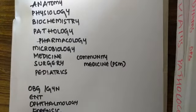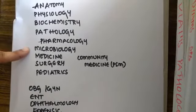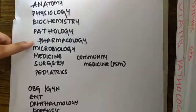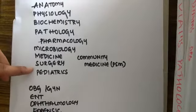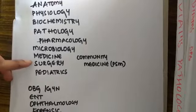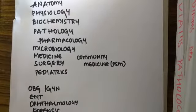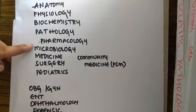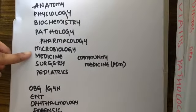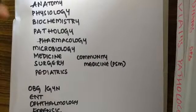Among all these subjects, everything gets repeated. What we learn in anatomy, physiology, biochemistry applies to pathology, pharmacology, and microbiology. Pathology, pharmacology, and microbiology are again repeated in medicine and surgery. The only difference in medicine and surgery is the treatment part which is extra when compared to pathology, pharmacology, and microbiology.